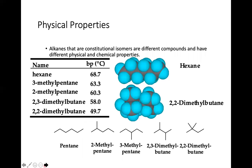Alkanes that are constitutional isomers are different compounds and have different physical and chemical properties. The structure of a compound is a very important factor in relation to its boiling point, melting point, and density. For example: hexane, 2,2-dimethylbutane, pentane, 2-methylpentane, 3-methylpentane, 2,3-dimethylbutane, and 2,2-dimethylbutane all have different physical properties.